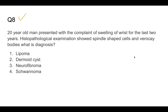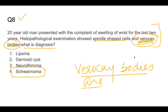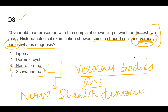Question number eight: a 20-year-old male presents with swelling of the wrist for the last two years. Histopathological examination shows spindle-shaped cells and Verocay bodies. The main pointer here is Verocay bodies — these are very characteristic of schwannoma. Both neurofibroma and schwannoma are nerve sheath tumors, but Verocay bodies are seen in schwannoma and not in neurofibroma.